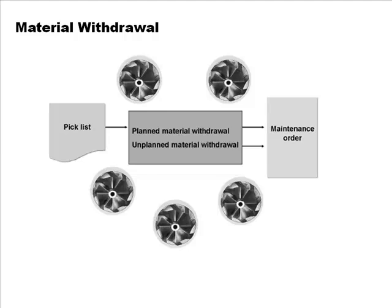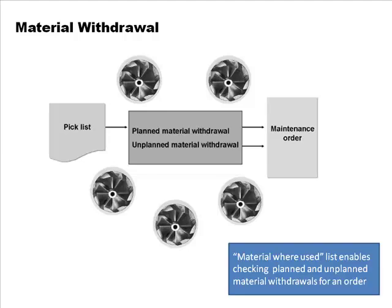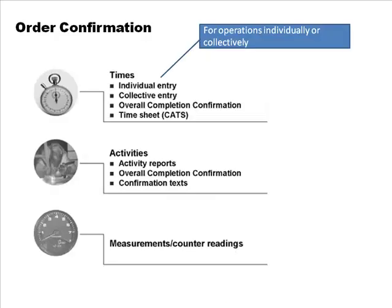There can be planned material withdrawals and unplanned material withdrawals against a maintenance order. At the end of the process, there is a report called the material where-use list, which enables tracking of how much material was used, how much was planned, and how much was unplanned. This list allows you to correlate material usage with the order.